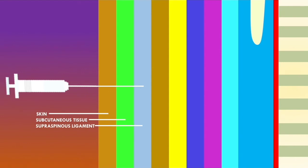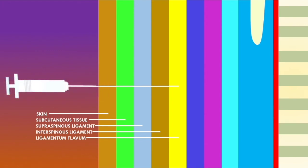If the needle is advanced even further, it has now penetrated the interspinous ligament. Once advanced even further, the needle has now penetrated a ligament called the ligamentum flavum. The ligamentum flavum is also known as the yellow ligament, which is why this layer is colored in yellow.